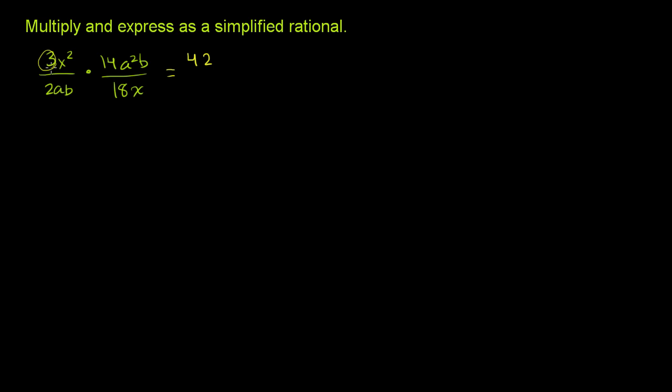So that's the 3 and the 14. Then we have an a squared, 42a squared. Then we have a b. I'll write these in alphabetical order. And then we have an x squared. So I just changed the order, but I just multiplied all of these things in both numerators. So that's the numerators multiplied.